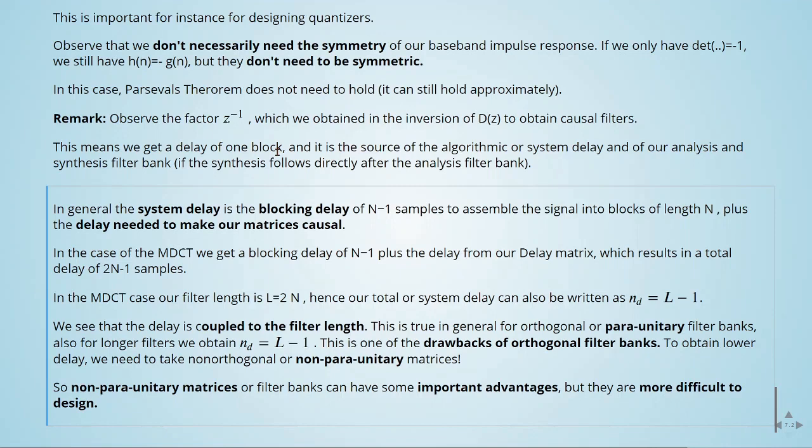In general, the system delay is the blocking delay of n minus 1 samples to assemble the signal into blocks of length n, plus the delay needed to make our matrices causal. This is a very important result. It's telling us that the system delay is equal to the blocking delay of n minus 1 samples. It's necessary to assemble the signal into blocks of length n, plus the delay needed to make our matrices causal.